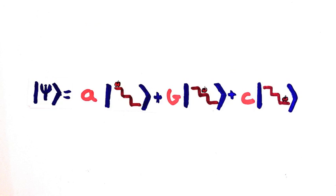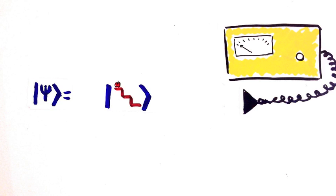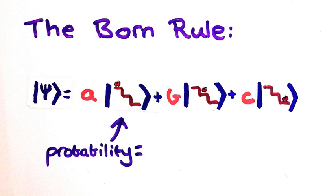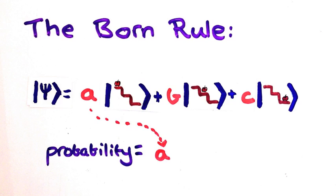So as usual, we have our wave function in a superposition of all possibilities. If I measure it will collapse to just one of these. To find the probability that it will collapse to this state, all I have to do is take this coefficient and square it. That's all.